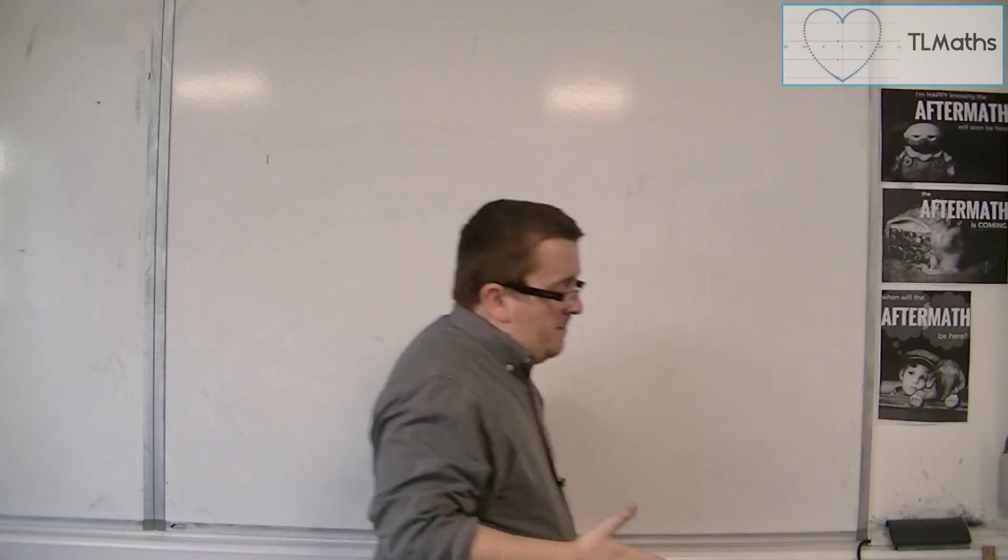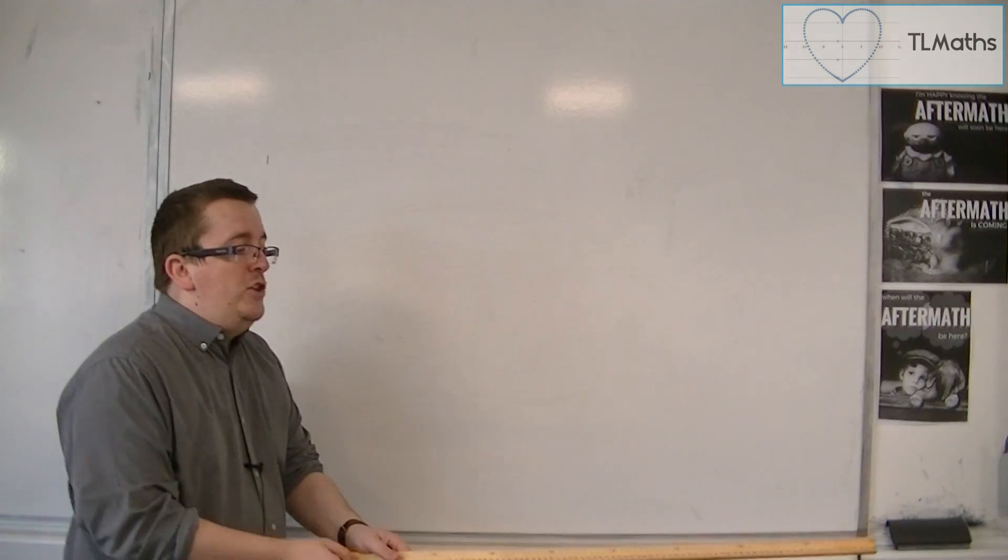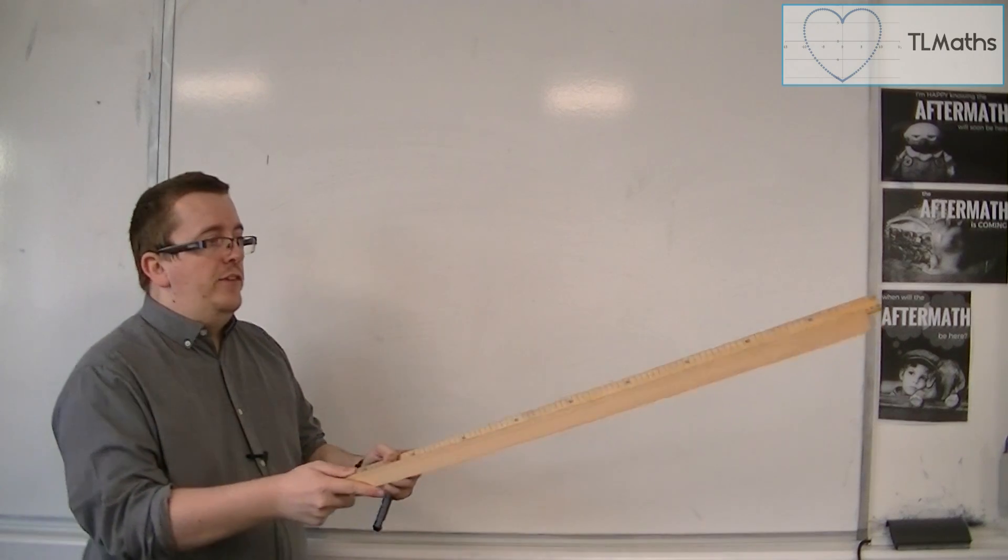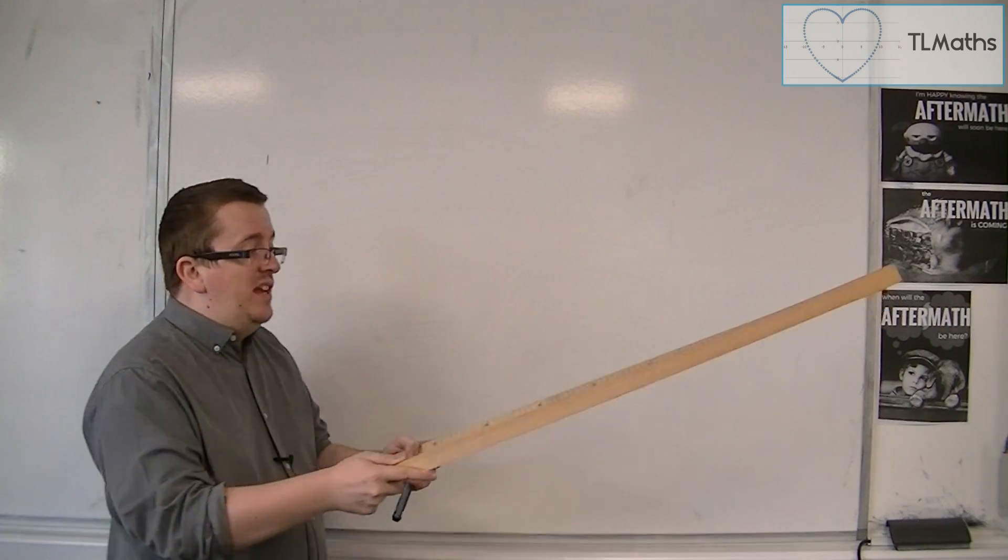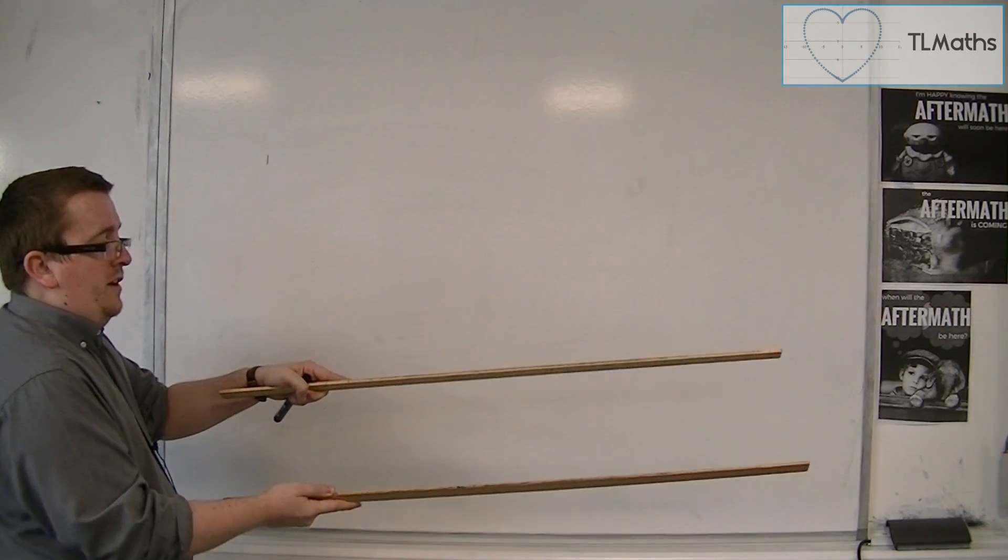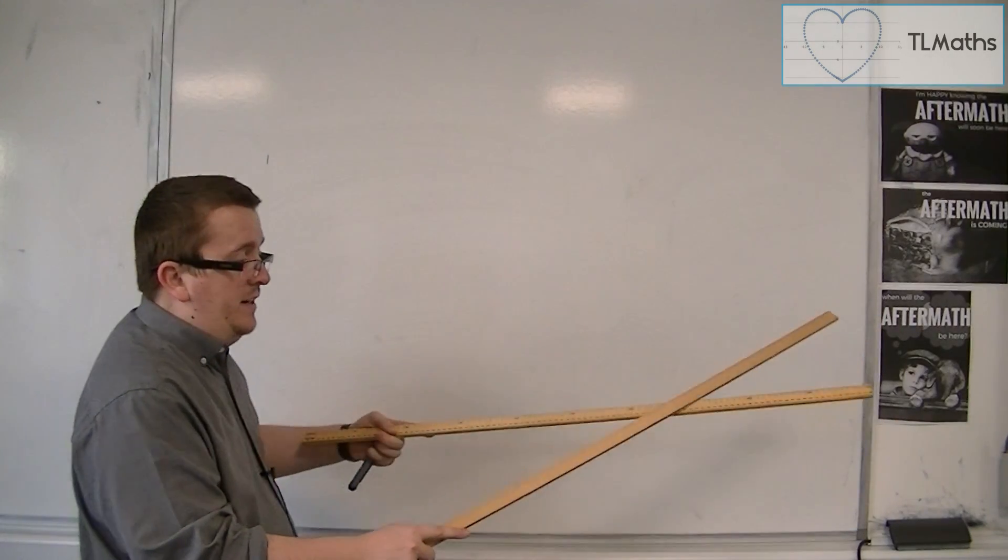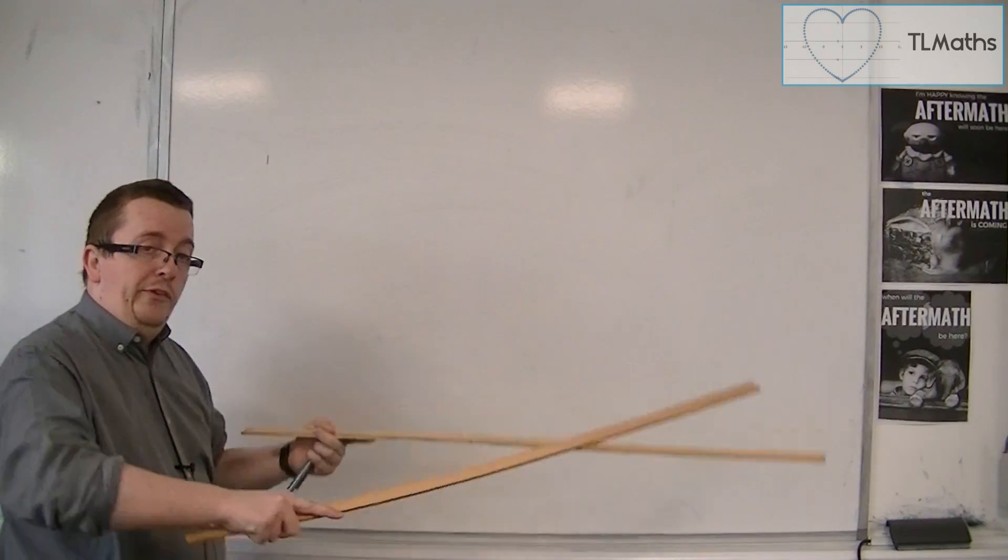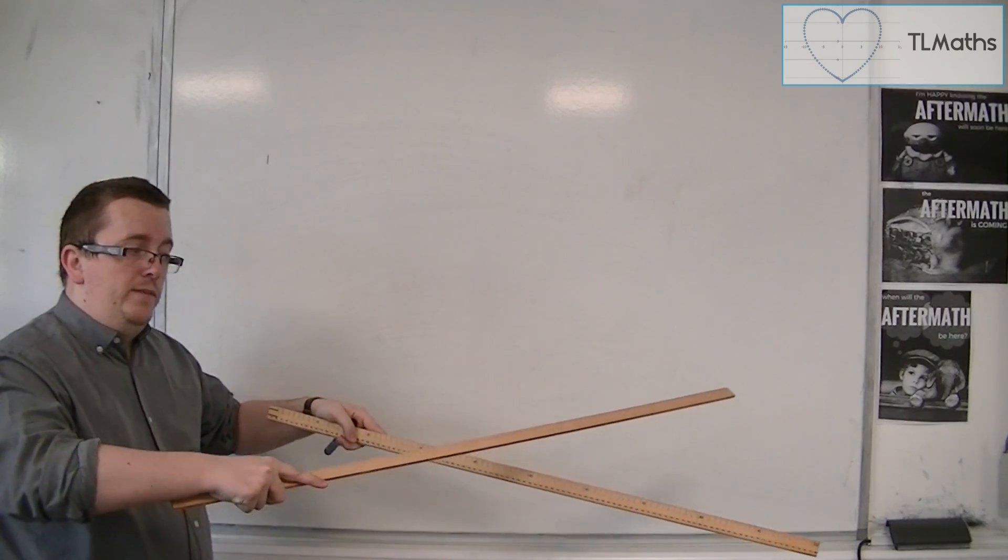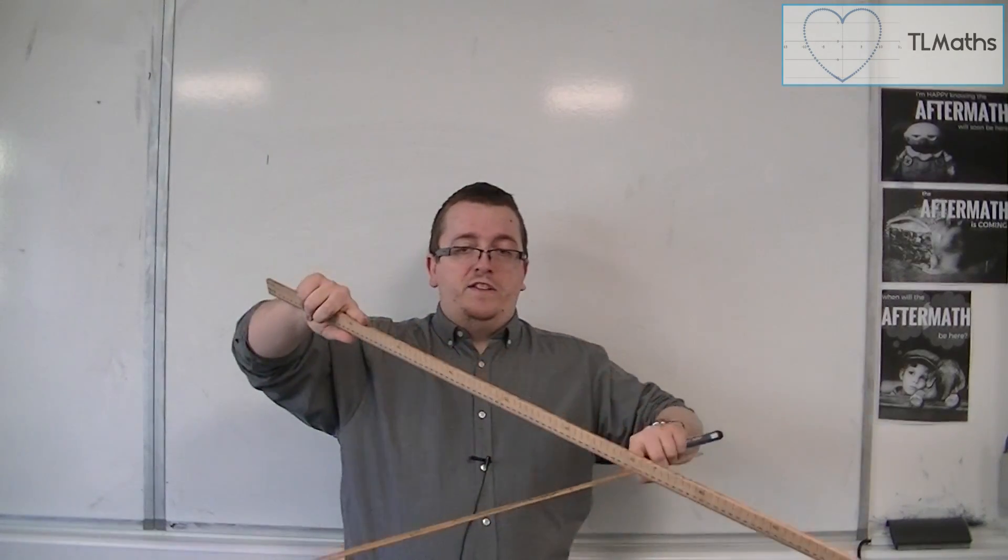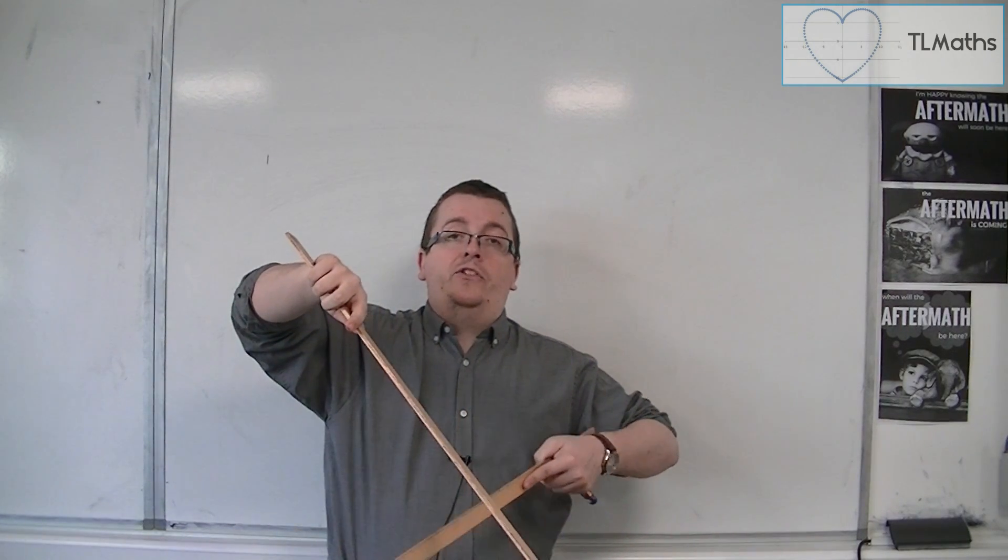In 3D, however, you have three different possibilities. Essentially, in 3D, you have the situation where the two lines could be parallel. That could still happen. Or they could indeed intersect. That is also a possibility. Or they could completely miss each other. So it could be the situation where the two lines just completely miss each other. And hence, they are known as skew lines.